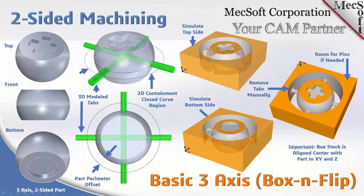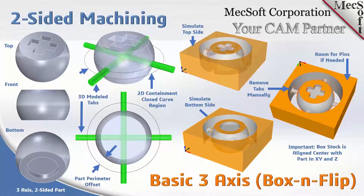When you flip it over and do the other side, since it's a square box, the part and the stock are centered in X, Y, and Z. When you do side one, then flip it over and set the setup to the same position, it will line up automatically. The complexity of the part doesn't matter — you just need to make sure the part and the stock are aligned at center. We'll talk about what to do if they're not in just a moment. That's the basic box-and-flip in three-axis.